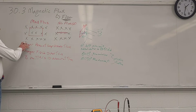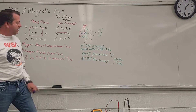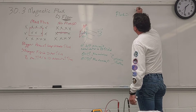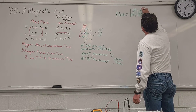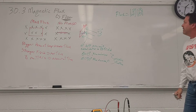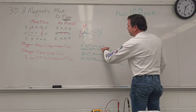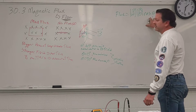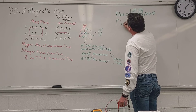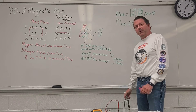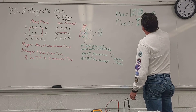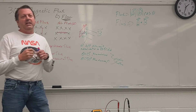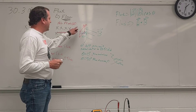Putting together these relationships — bigger the area, more the flux; stronger the field, more the flux; and the angle matters as a cosine function — the flux equals the magnitude of the area times the magnitude of the B field times the cosine of theta, where theta is the angle between the area unit normal vector and the magnetic field. Notice this is a cosine, so using vector multiplication, this is a dot product. We can write the flux as A dot B.